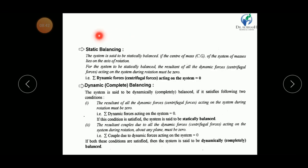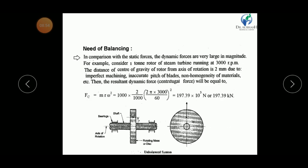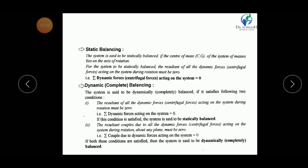Now let us understand static balancing. A system is said to be statically balanced if the center of mass (CG) of the system of masses lies on the axis of rotation. When the CG of the rotor is not on the axis of rotation, the rotor has unbalanced forces. In other words, for static balance, the resultant of all dynamic forces acting on the system during rotation must be zero — that is, the summation of all dynamic forces equals zero.